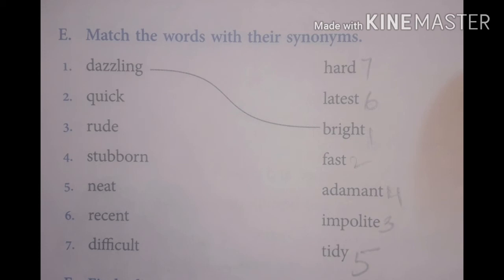Fourth word is stubborn, that means adamant: A-D-A-M-A-N-T. Then fifth word is neat, that means tidy. Sixth word is recent, that means latest. And seventh word is difficult, that means hard.